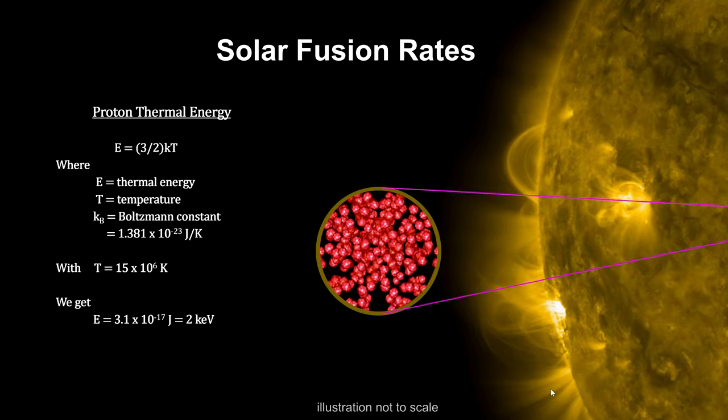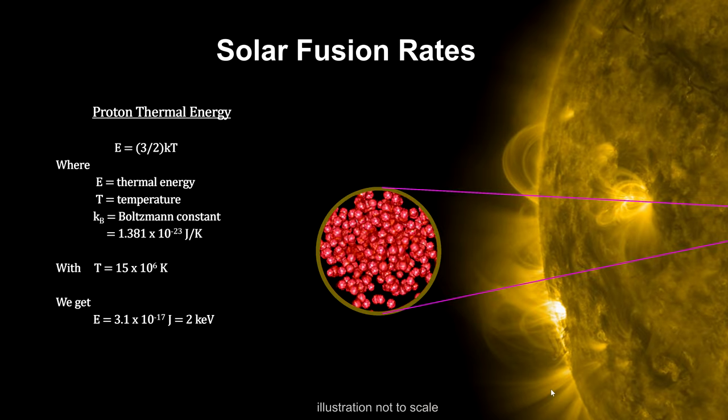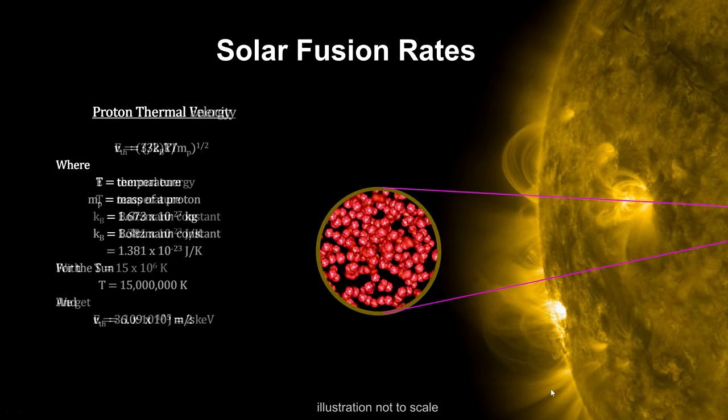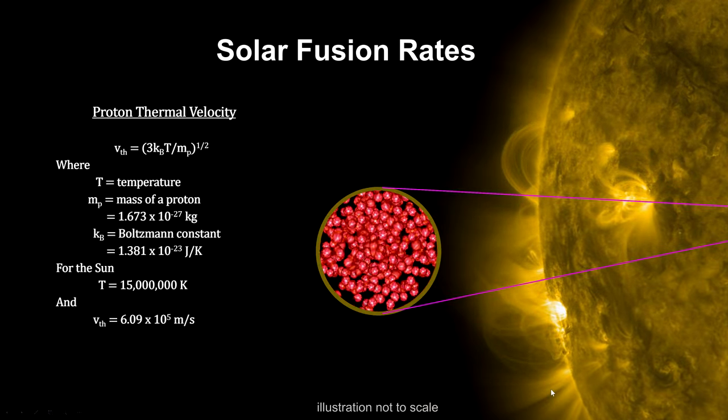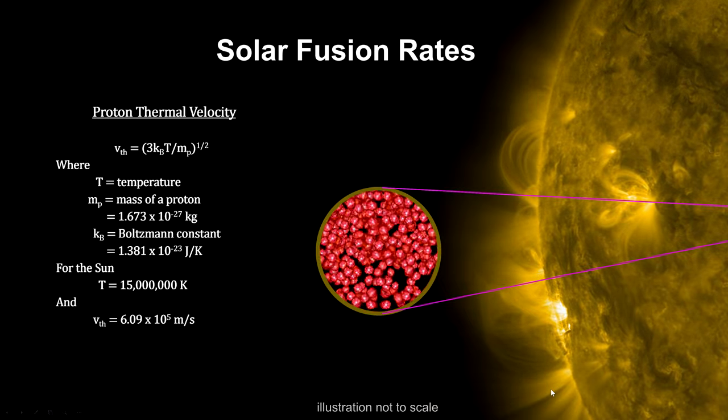We find that each proton has, on average, 2 kilo electron volts of kinetic energy and travels at just over 600,000 meters per second. That's well over a million miles per hour.